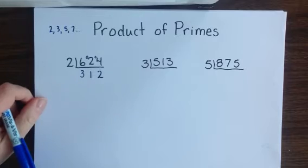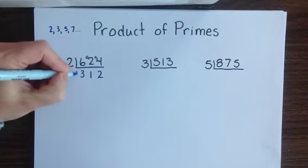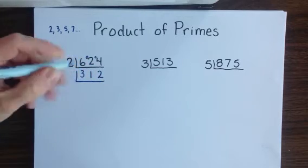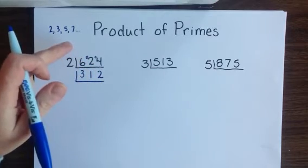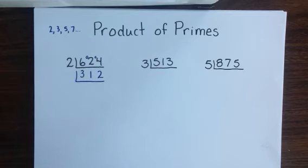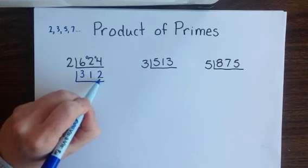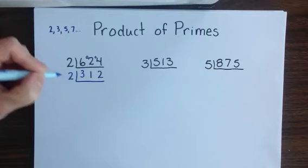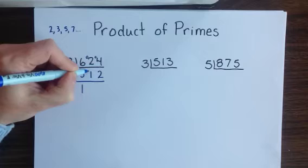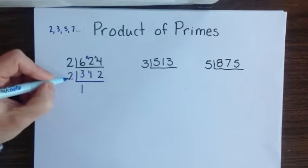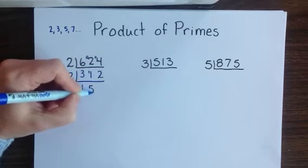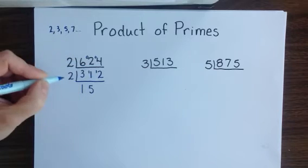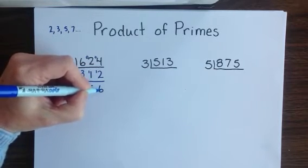This leaves us with 312. Since we did our division upside down, our answer is now at the bottom instead of on top, making it easy to write yet another division symbol and divide again. Since 312 ends in a 2, it's an even number, so I can divide by 2 again. 2 fits into 3 one time with 1 remaining, 2 fits into 11 five times with 1 remaining, and 2 fits into 12 six times.